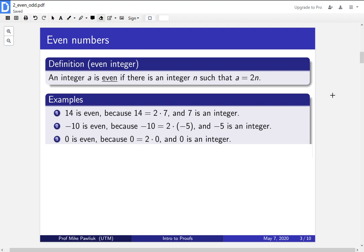Let's look at some examples. 14 is even because 14 is 2 times 7, and 7 is an integer. Minus 10 is even because minus 10 is 2 times minus 5, and minus 5 is an integer. Finally, one that's rather confusing is that 0 is even by this definition. Why? Can we write 0 as 2 times something? Yes, it's 2 times 0. Is 0 an integer? Yes it is. So even though it may be frustrating or upsetting, it is true that 0 is an even number.